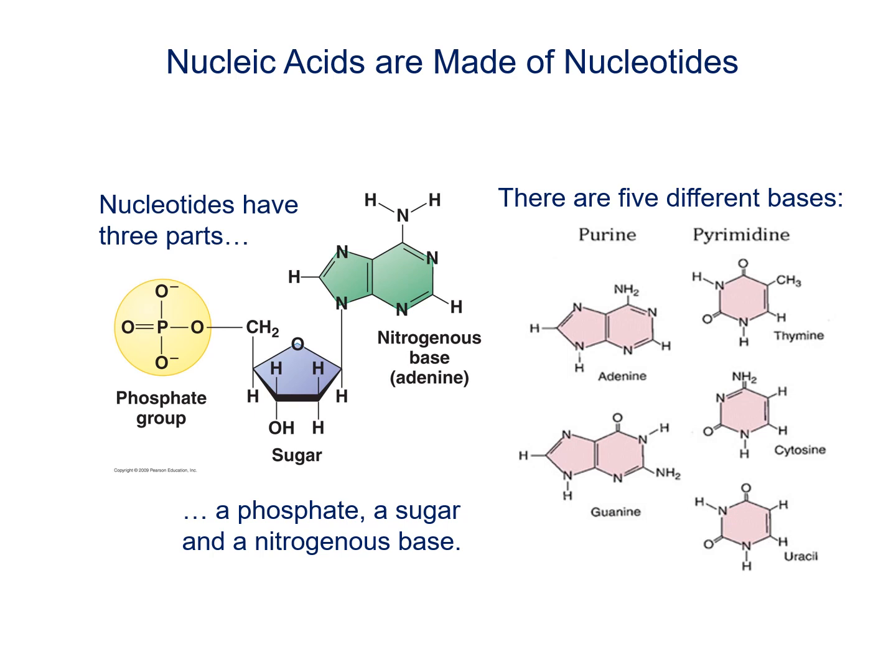Nucleic acids are built using nucleotides, and each nucleotide has three parts: a phosphate group, a sugar, and a nitrogenous base. The nitrogenous bases are so named because they contain quite a bit of nitrogen. The nitrogenous bases come in five varieties. We have one group known as the purines — they're wider and contain two organic rings. Then we have a second group known as the pyrimidines, which are narrower, consisting of just a single ring. We have adenine, guanine, thymine, and cytosine in DNA. In RNA we have the same, except thymine is replaced by uracil.